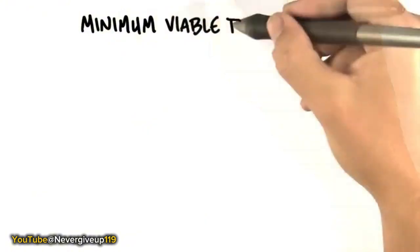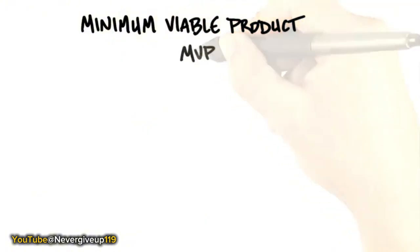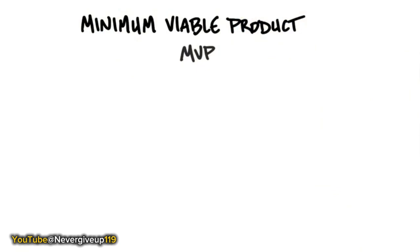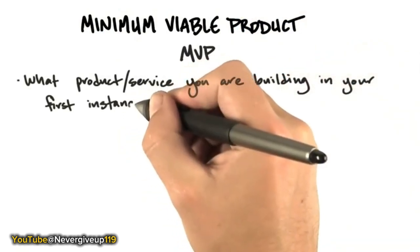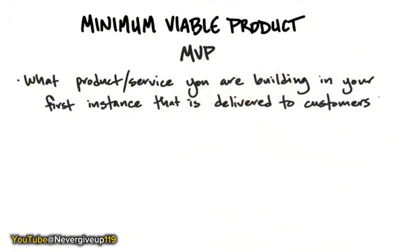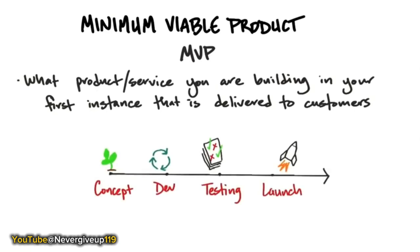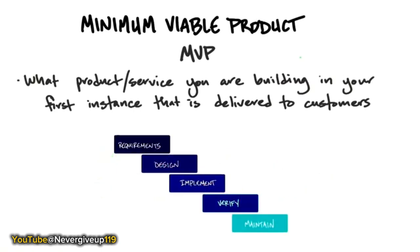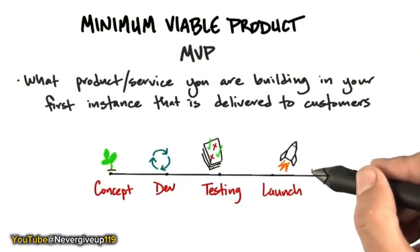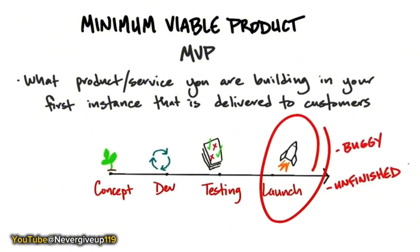All of this is to define the minimum viable product, or MVP. The MVP is the product or service you're building in your first instance that's delivered to customers — and the MVP is not an alpha or beta. In the old days, the product development process would go from seed funding to concept to a market requirements document to an engineering requirements document, blowing out into an entire waterfall development process with alpha test, beta test, and first customer ship — essentially shipping a buggy, unfinished product and asking customers to test it.